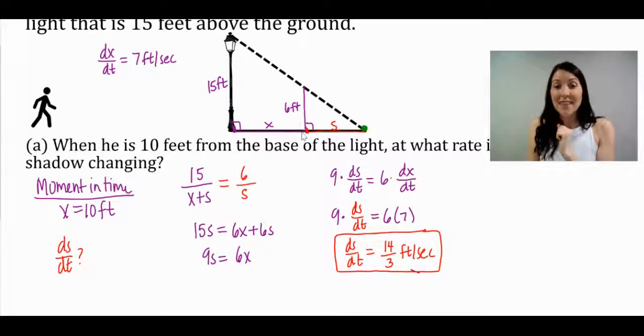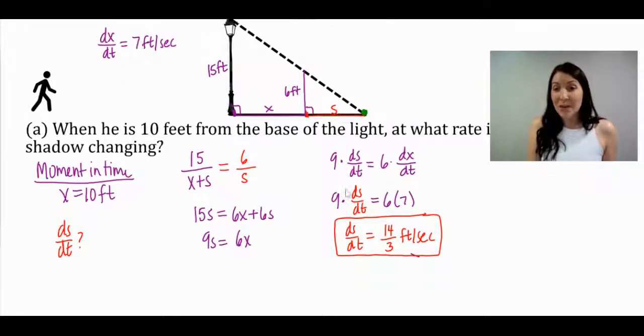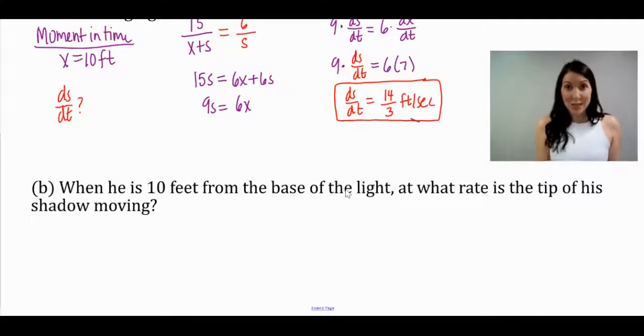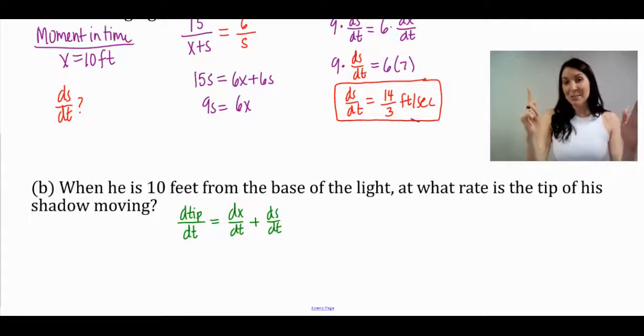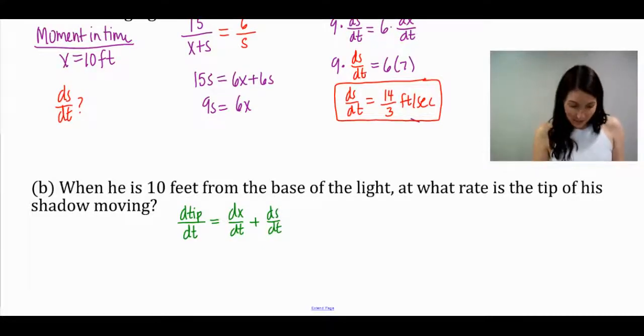All we need to do is simply add those two together, and that would tell us at what rate this whole entire distance, which represents the tip of the shadow, would be changing. So the speed that the tip is changing with respect to time would be a combination of the rate that x is changing plus the rate at which the shadow is changing, because the tip is made up of both the part x and the part s. So let's add them together. We had 7 plus 14 thirds, and that gives us an answer of 35 thirds. Again, we need that unit in there, and that would be feet per second.